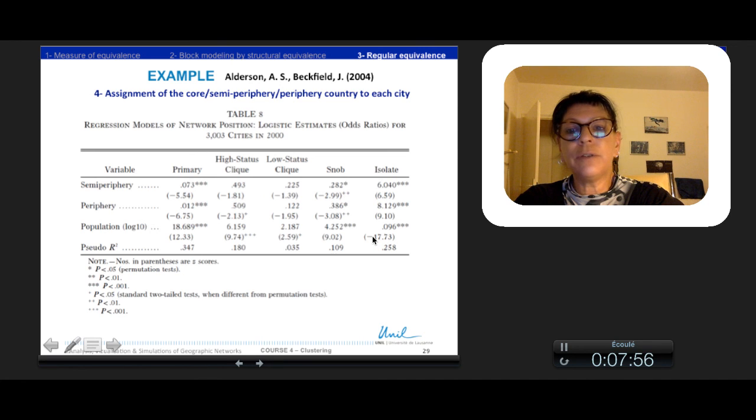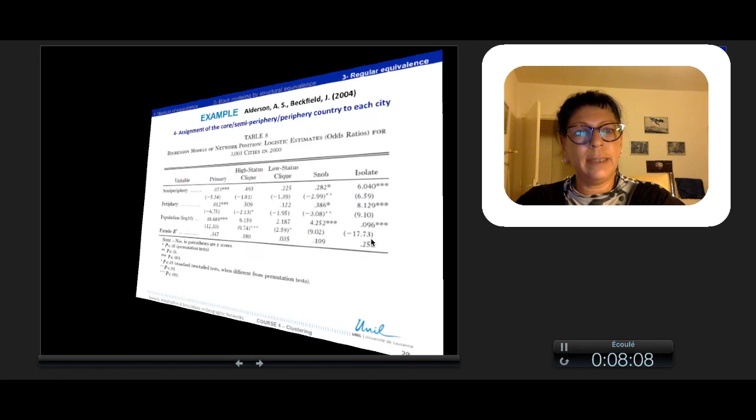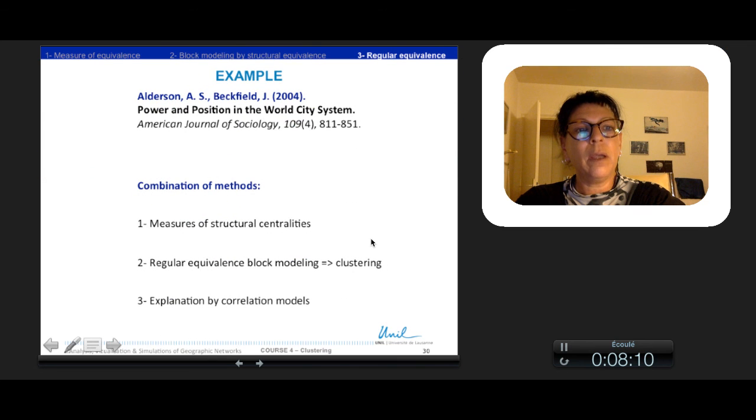So the main result of the study is that the ordering of cities' power and prestige is consistent with the one of their respective countries. However, they found little evidence of some new geography of centrality beyond the strict result.